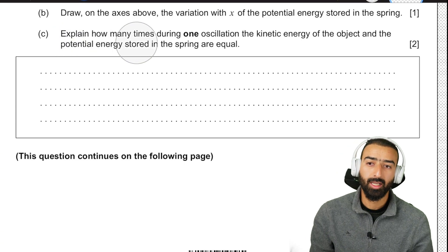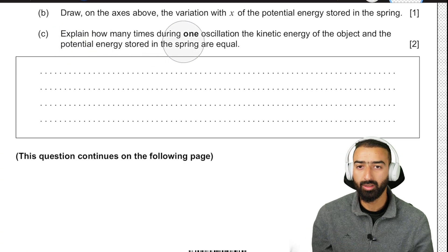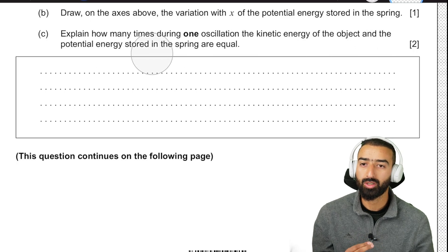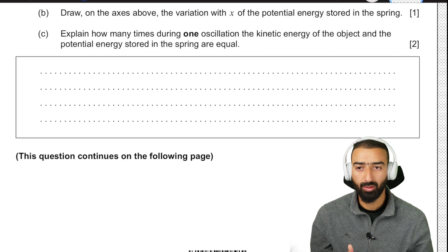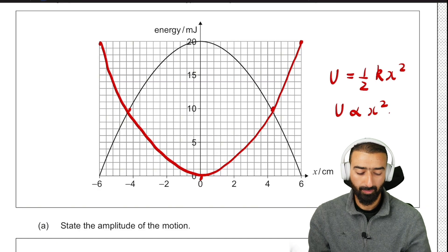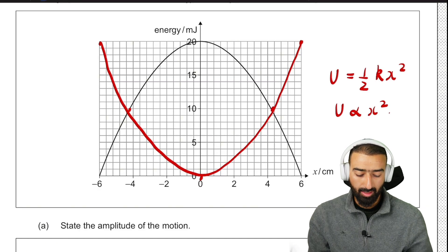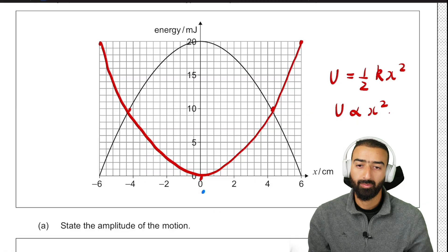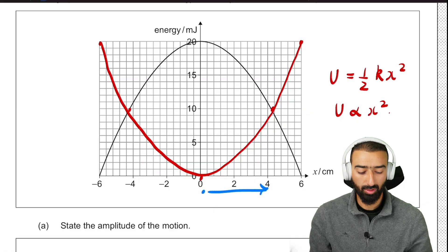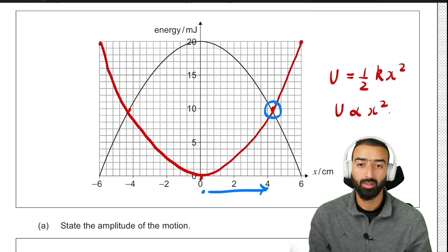Explain how many times during one oscillation, the kinetic energy of the object and the potential energy stored in the spring are equal. Okay, if you go back to this plot, let's say the object starts from here. As it goes to position x equals 4, the kinetic and potential are equal.